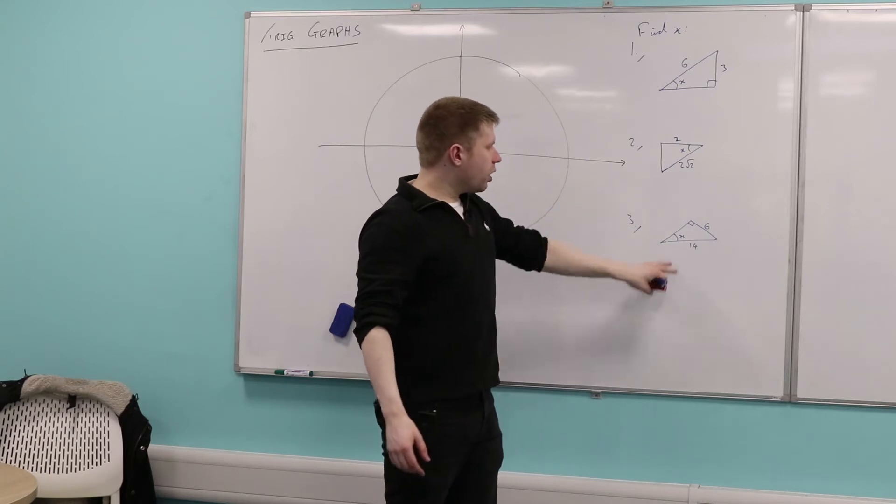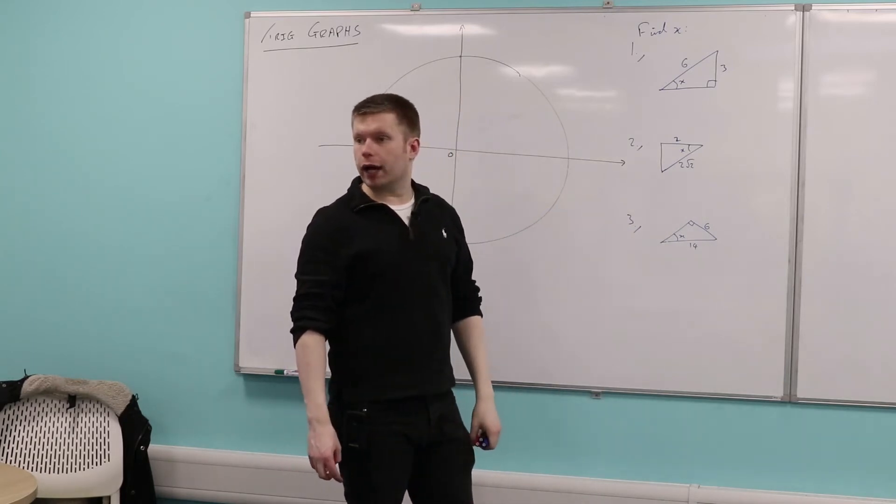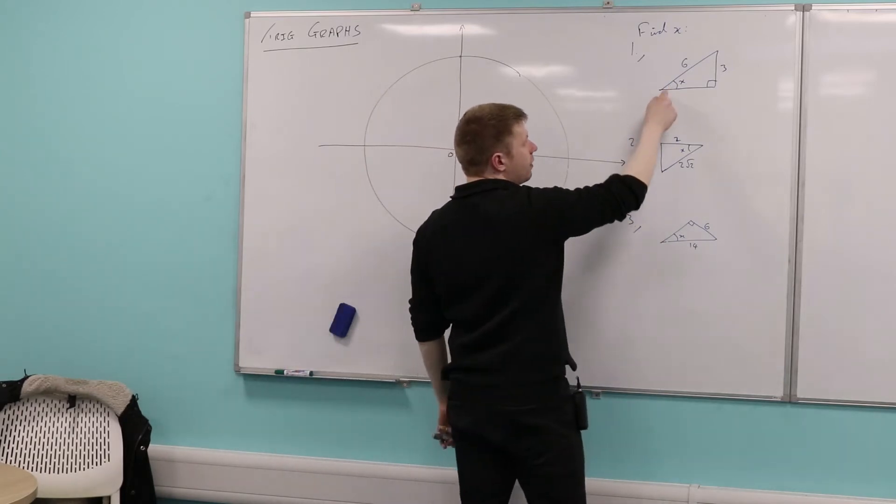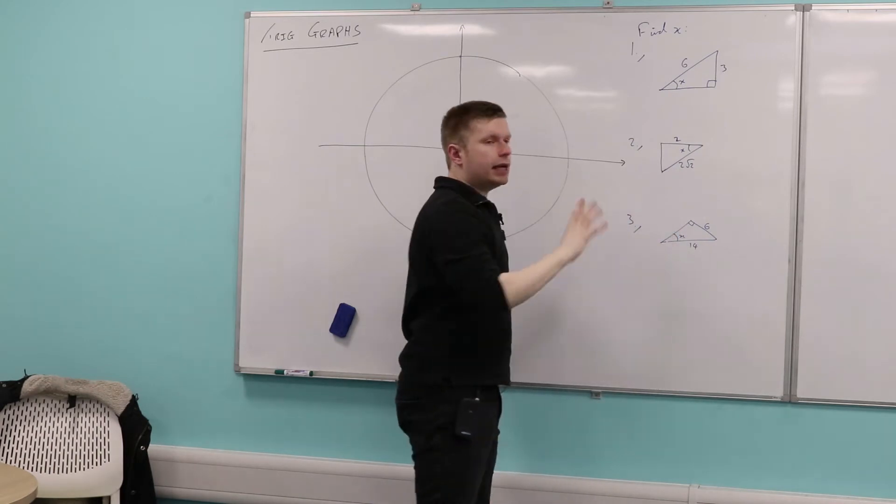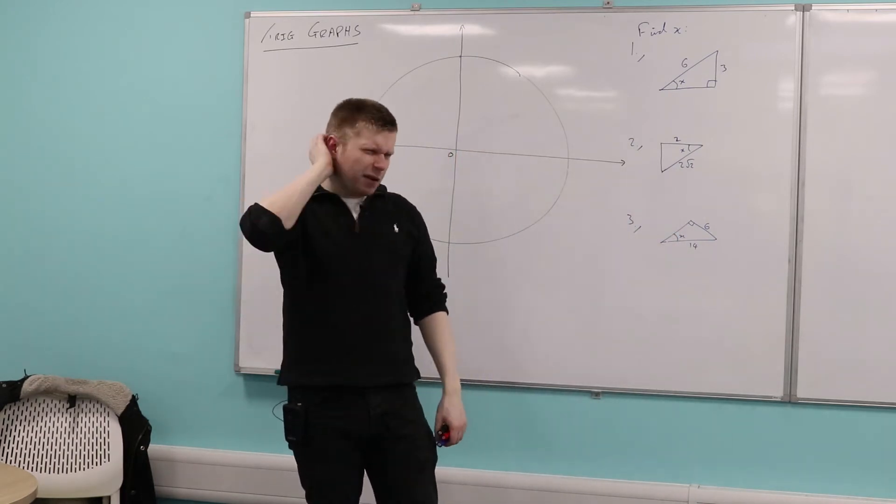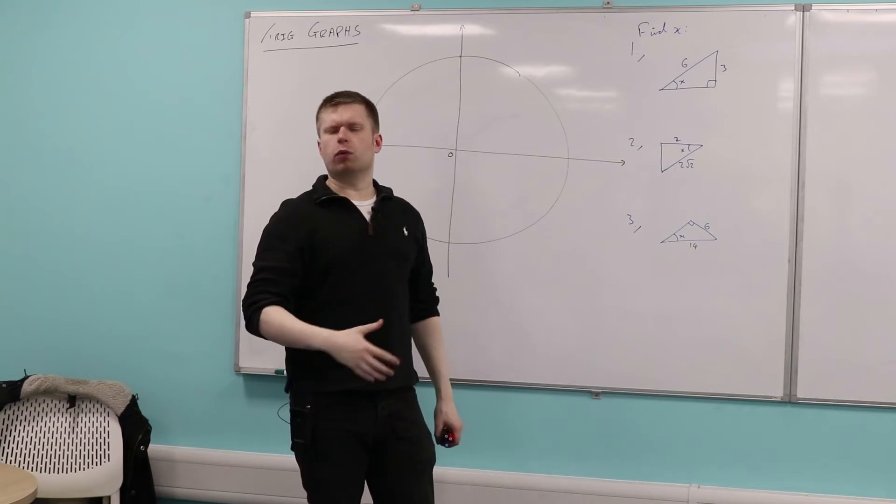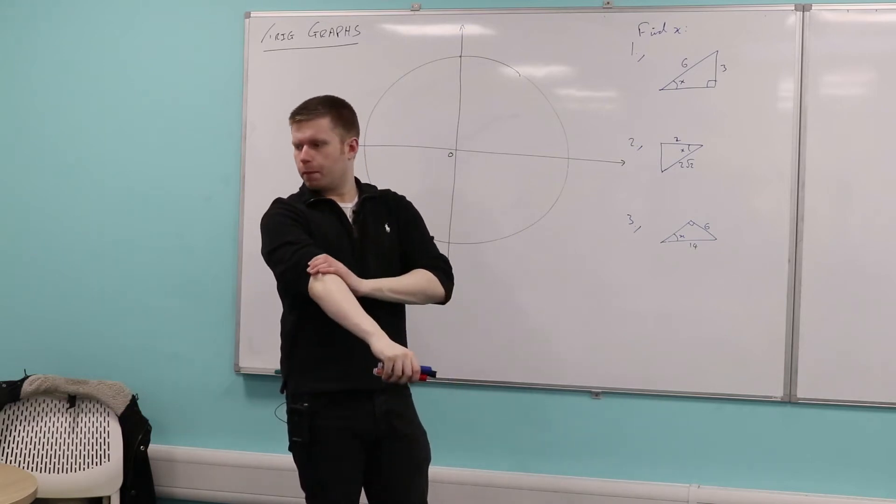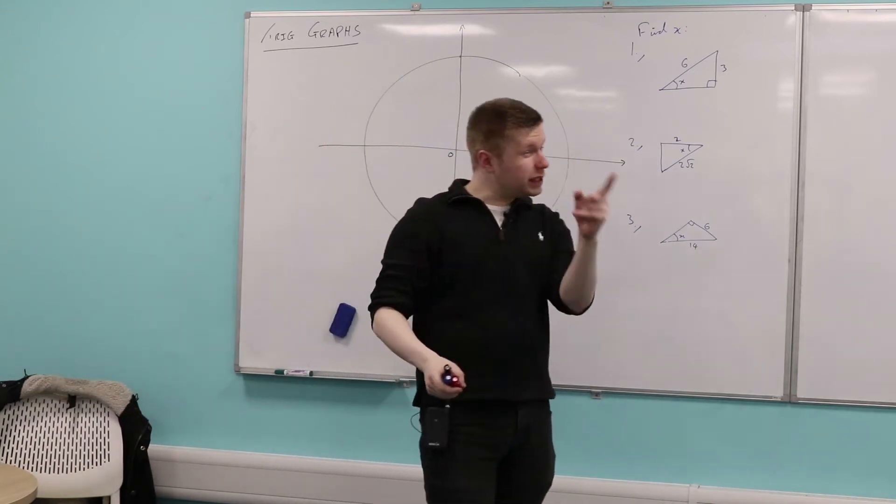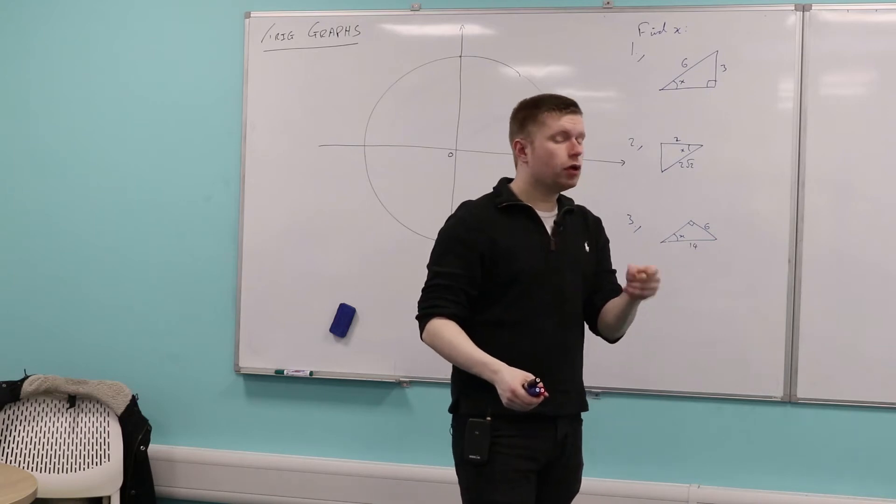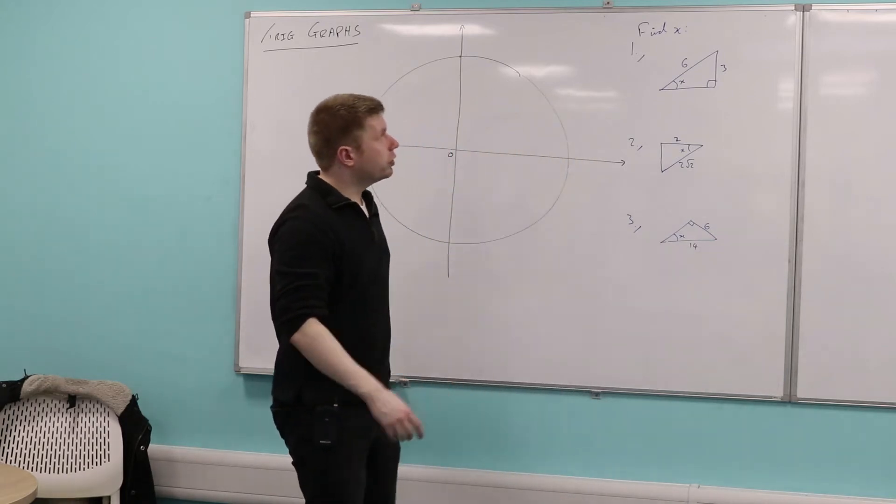So here we have three right-angled triangles. And I've just asked you to find the missing angle in each of these different triangles. Now, can anybody remember, what is trigonometry? What's it all about? Triangle. It's about triangles. Specifically, what type of triangles? Right-angled. Right-angled triangles. Good, absolutely.